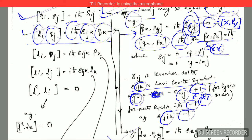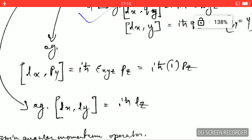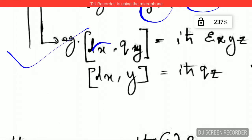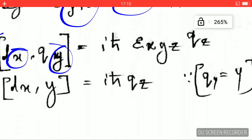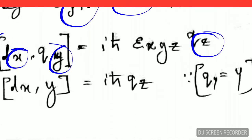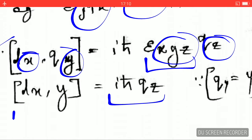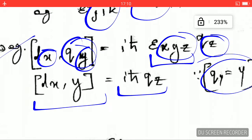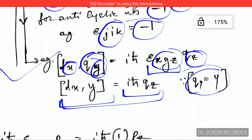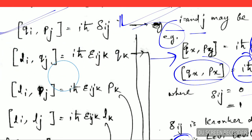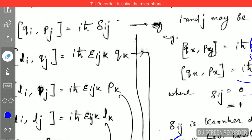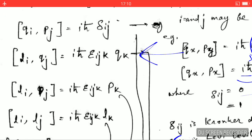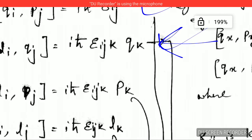For example, let i=X, j=Y, k=Z. Since X→Y→Z is cyclic, ε_XYZ = +1. The commutation gives [L_X, q_Y] = iℏ · (+1) · q_Z = iℏ · Z, since q_Y = Y and q_Z = Z. This is how the formula works — just one formula can yield many commutation relations.